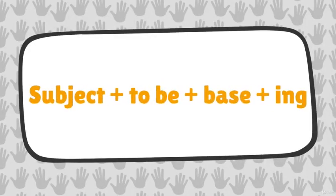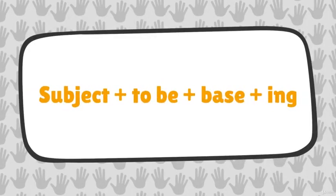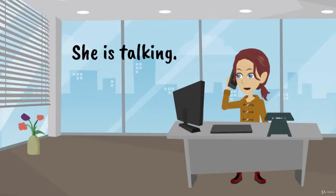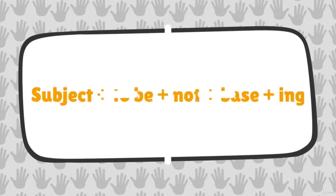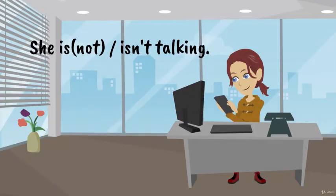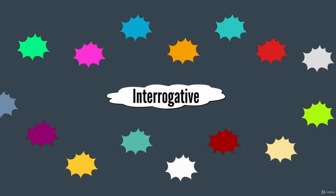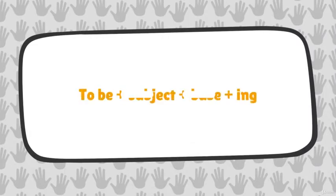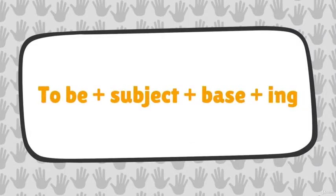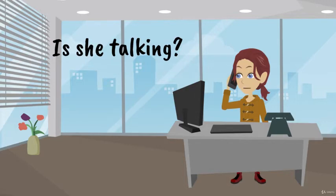Subject plus to be plus base plus ing. She is talking. Negative. Subject plus to be plus not plus base plus ing. She is not or isn't talking. Interrogative. To be plus subject plus base plus ing. Is she talking?